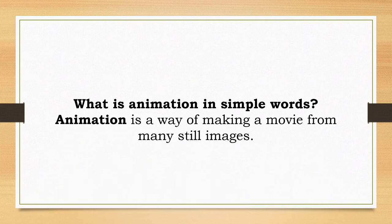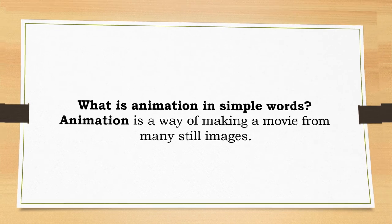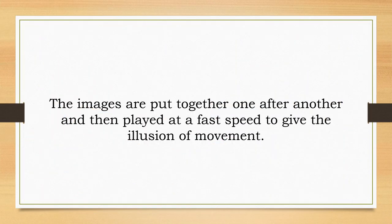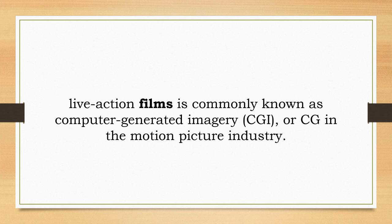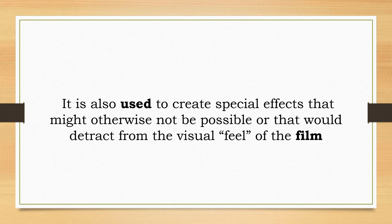What is animation in simple words? Animation is a way of making a movie from many still images. The images are put together one after another and then played at a fast speed to give the illusion of movement. A person who makes animations is called an animator. Computer animation in live-action films is commonly known as computer-generated imagery, CGI, or CG in the motion picture industry. It is also used to create special effects that might otherwise not be possible, or that would detract from the visual feel of the film.